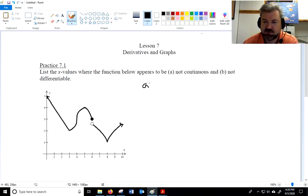Okay, so first, where is this function not continuous? It is not continuous at x equals 6 because of a jump discontinuity. And is there anywhere else? I don't see any.